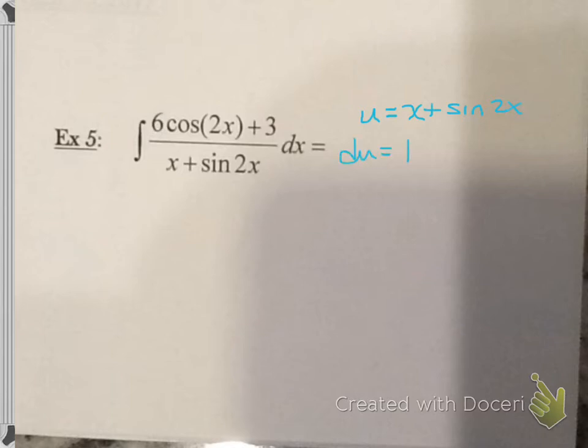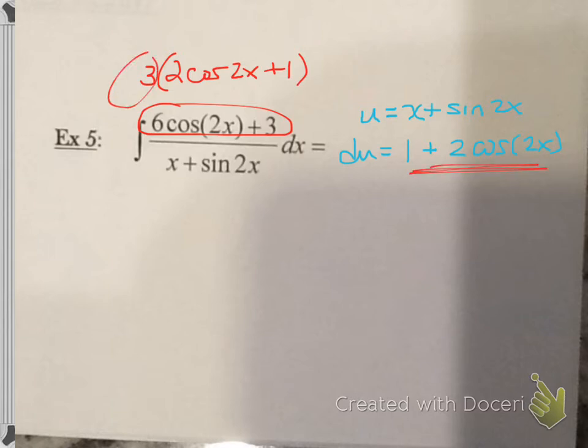So the derivative is 1 plus 2 cosine of 2x. Now you look at that and you say, it doesn't quite look the same. I agree with you. However, if we look carefully at the top, that is really the same thing as pulling a 3 out. And you have 2 cosine of 2x plus 1. And sure enough, there it is. So we're off by a 3. We do need to compensate for that.